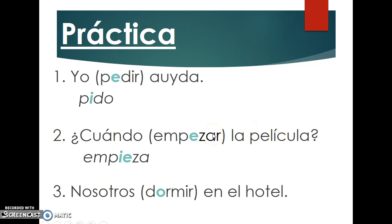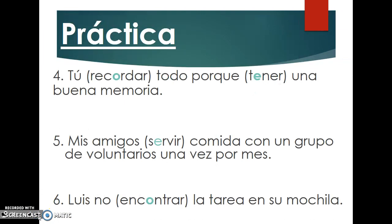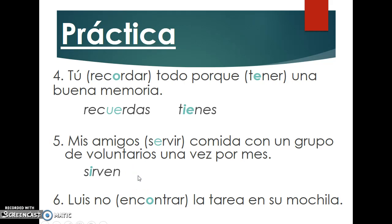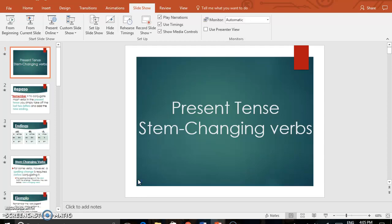Number two: 'Nosotros dormimos en el hotel.' Be careful — nosotros falls outside the boot, so there is no stem change. If you wrote 'duermimos,' correct that. Number three: 'Tú recuerdas todo porque tienes una buena memoria' — both verbs conjugated in the tú form since the subject doesn't change. Number four: 'Mis amigos sirven comida con un grupo de voluntarios una vez por mes.' Number five: 'Luis no encuentra la tarea en su mochila' — Luis refers to he, so it's the third person singular. That's the end of the presentation. I hope you're feeling confident with stem changers. Please jot down any questions and ask in class tomorrow. Thanks — adiós!